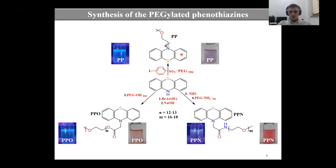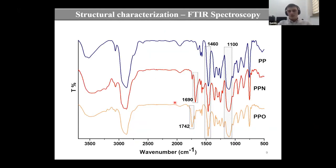The synthesis pathway was done using three different methods. The first compound PP was obtained by direct alkylation of the tosylated polyethylene glycol to the phenothiazine core. Compound PPN was obtained from an activated ester of the phenothiazine, and the PPO compound was obtained by direct esterification of the phenothiazine acid with hydroxy polyethylene glycol using coupling agents. The successful synthesis was confirmed by two spectroscopic methods. FTIR spectroscopy represents the vibrational bands characteristic to the functional groups.